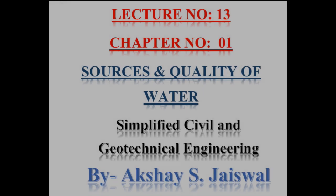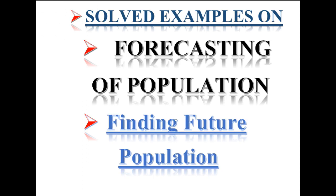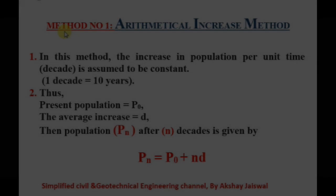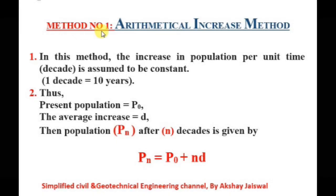Chapter number one: Sources and Quality of Water. Solved examples on Forecasting of Population, that is, Finding Future Population. Our first method is the Arithmetical Increase Method. In this method, the increase in population per unit time is assumed to be constant.